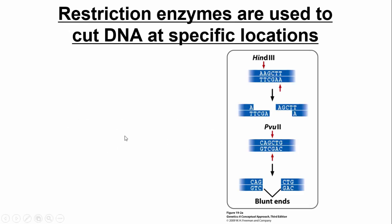Restriction enzymes cut DNA at specific locations. For example, HindIII cuts at a specific sequence, and PVU2 cuts at another. Sometimes you get staggered cuts, called sticky ends, which are almost always preferred. Other enzymes produce blunt cuts. Blunt ends are hard to ligate back together because you can't get any hydrogen bonding. With sticky ends, you have some overlap where hydrogen bonding can occur between the top and bottom strands, which makes ligation much easier.